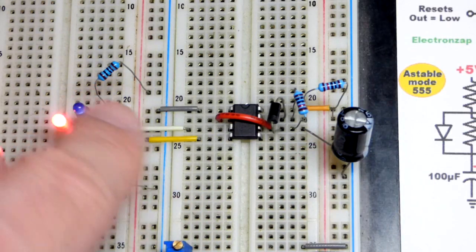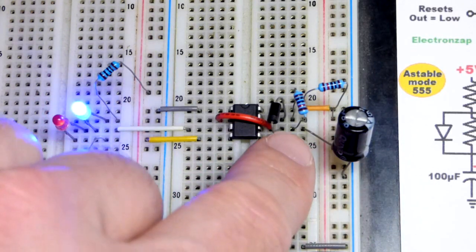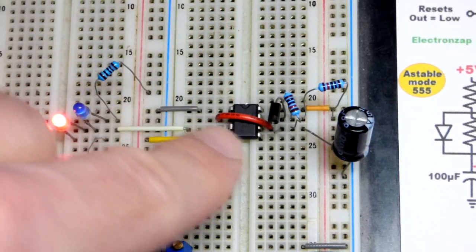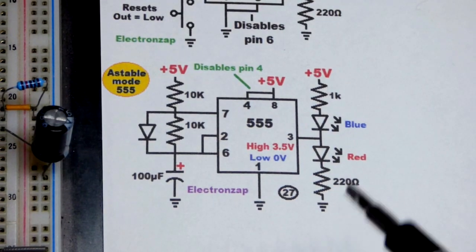When it hits two-thirds supply voltage, the output goes low and the capacitor discharges through that 10k resistor to pin 7, which goes to ground. It discharges. We'll look at the schematic to help clear that up.